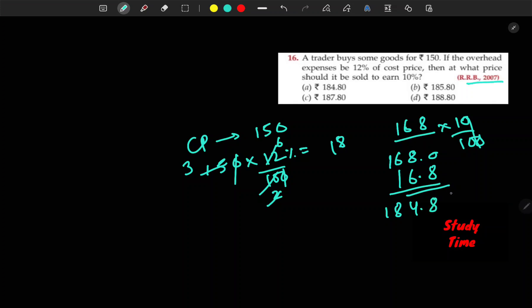Option A, 184.8, is the answer. So this is how you can explain: CP is 150, overhead expenses are 12% of cost. Then overhead expenses... 18. 18, because it is 12% of cost. 18 overhead.